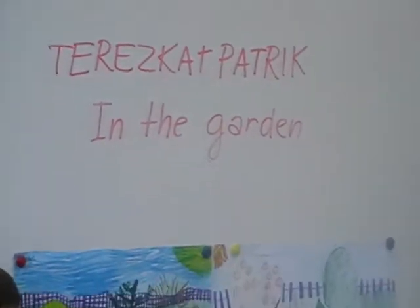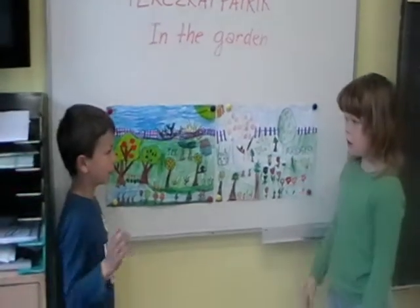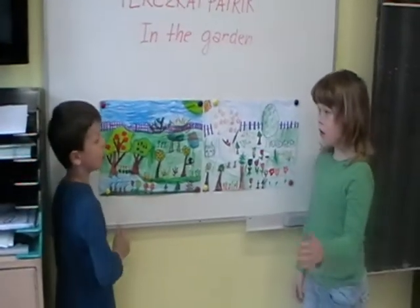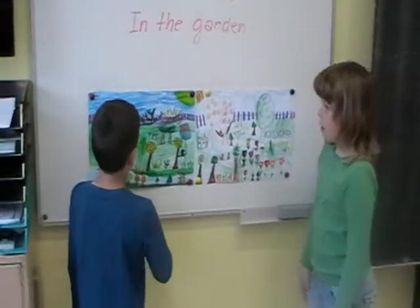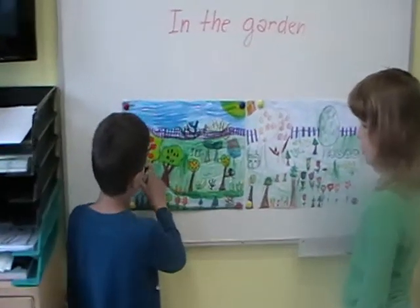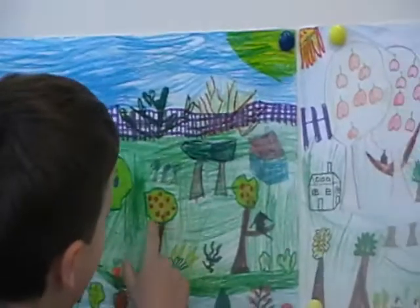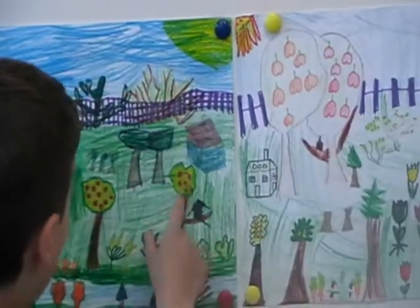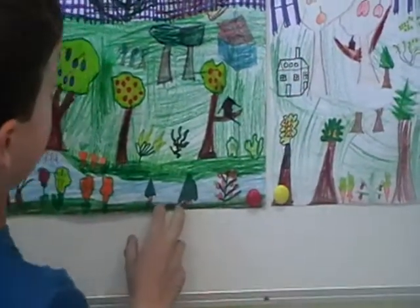Hello Tereska. Let's go to the garden. There are one, two, three, four, five, six trees.